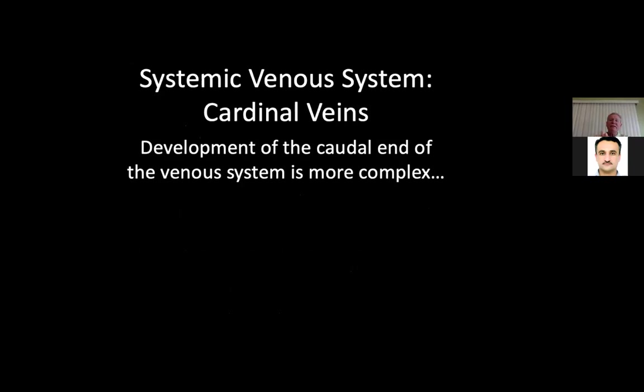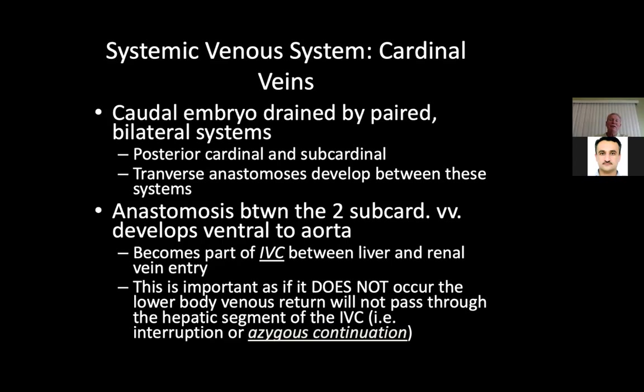The development of the caudal end of the venous system is more complex. The caudal embryo is drained by paired bilateral systems — the posterior cardinal and the subcardinal — and transverse anastomoses develop between these systems. The anastomosis between the two subcardinal veins develops ventral to the aorta and becomes part of the IVC between the liver and renal vein entry. If it does not occur, the lower body venous return will not pass through the hepatic segment of the IVC, and you will get interruption or azygous continuation.